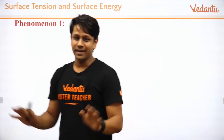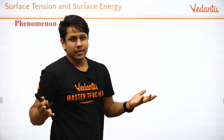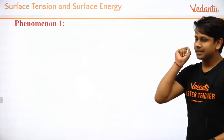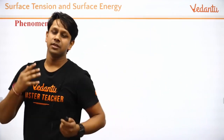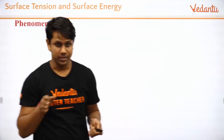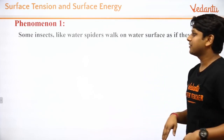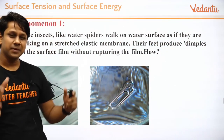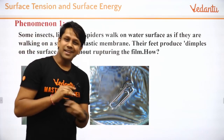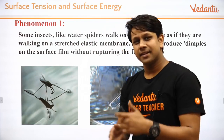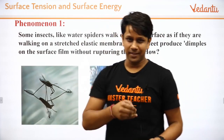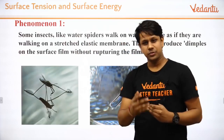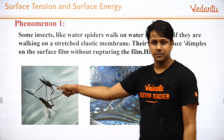Let's start the story of surface tension. First we will feel surface tension, because once you feel it, solving it is no big deal. There are some phenomena you observe in daily life but may not have thought about. For example, if you look at any water body — especially stagnant or dirty water — sometimes insects or mosquitoes float on it very easily.